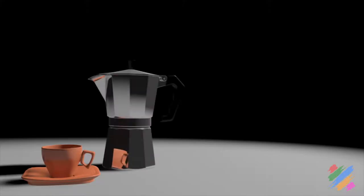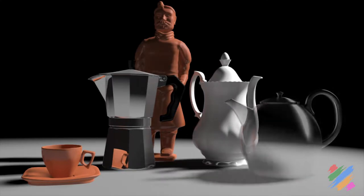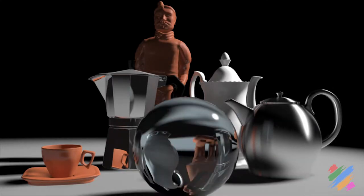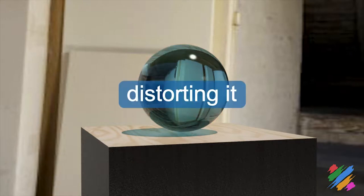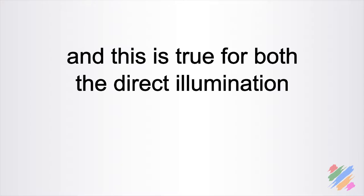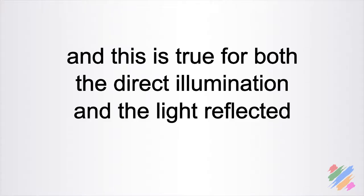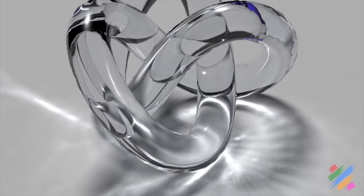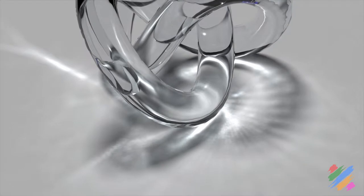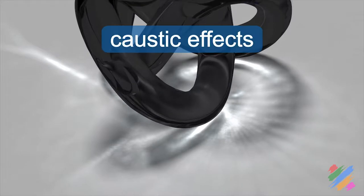Before we start to see these things from the practical point of view, there is one last aspect of transparency that we have to discuss, and it is what we call caustic effects. We have seen that a transparent object, according to its shape, is going to reflect and refract the light, distorting it. This is true for both direct illumination and the light reflected by our scene. In case of direct illumination, these distortions may result in lighting effects visible inside our picture, like for example those we call exactly caustic effects.